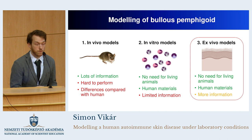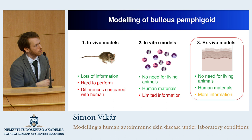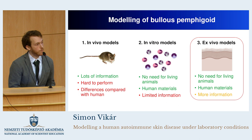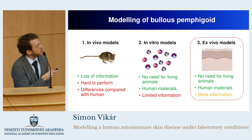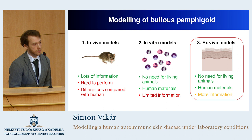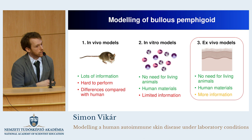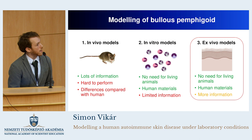The first possibilities are the so-called in vivo models. By these, we use, for example, mice — an animal — to model the human pathology in a living organism. These models contain lots of information, as all the molecular and cellular components are present in this living organism. But they are mostly hard to perform; we need to work with living animals, and it is not always clear what the human relevance of these findings is.